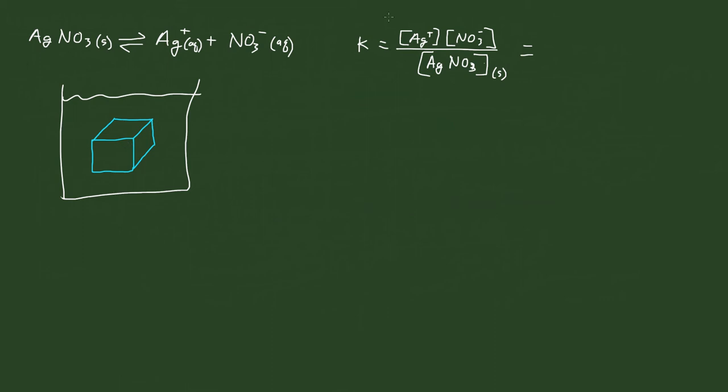And the amount that's going to dissolve is based on this K, which we actually call Ksp, because that's the solubility product constant.